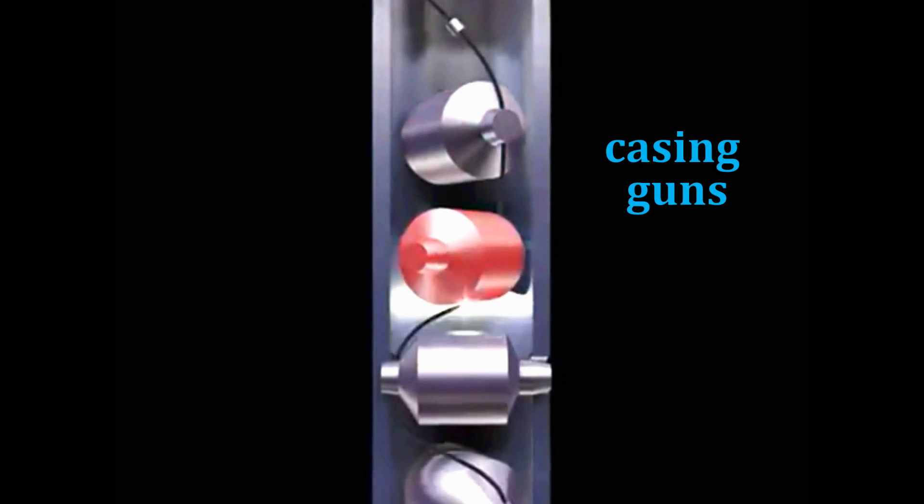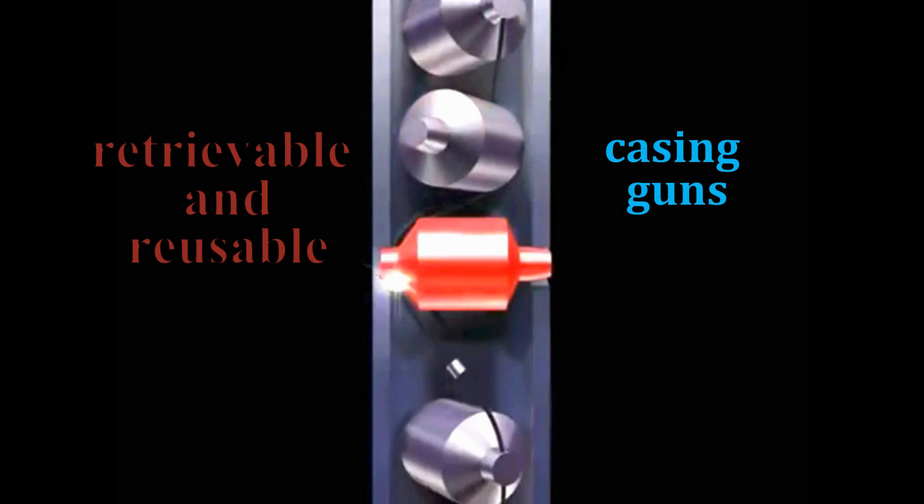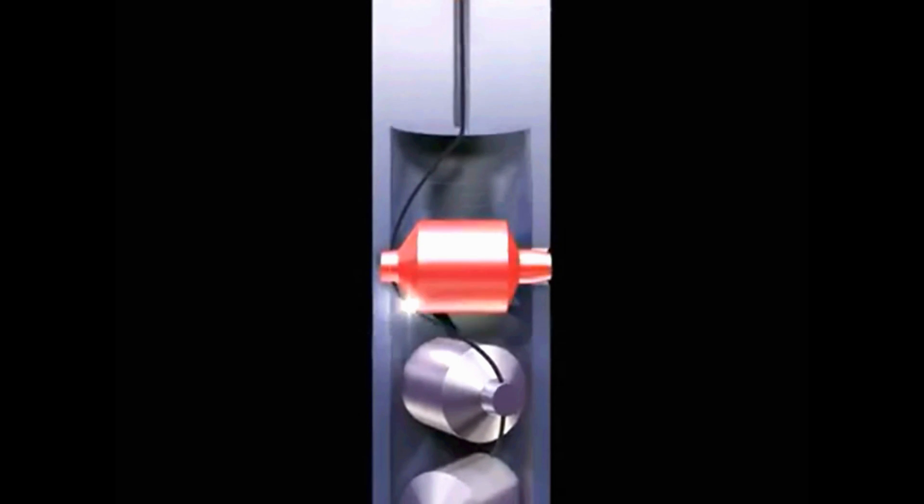Both retrievable and reusable, these casing guns are made of strongly constructed steel which are run on an electric wire line.